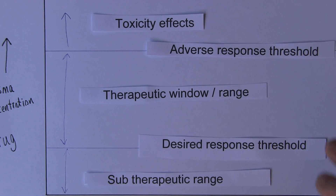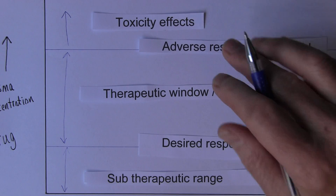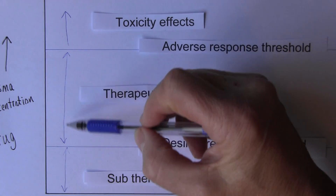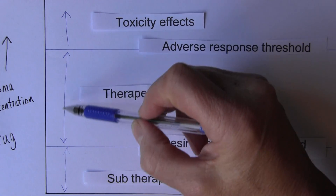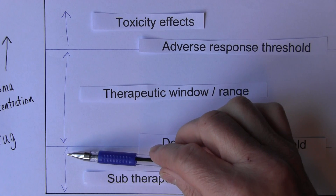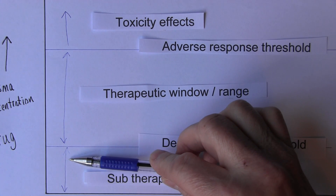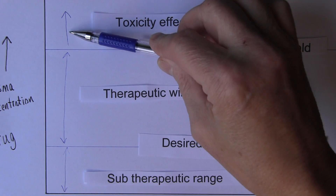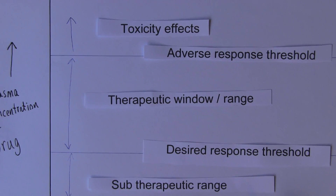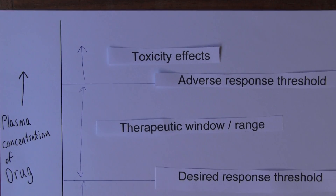We want the amount of drug to be between the desired response threshold and the adverse response threshold. This range in the middle is called the therapeutic window or the therapeutic range of the drug. We want our drugs to be in this therapeutic range — not below in the sub-therapeutic range, and not above in the toxicity range.